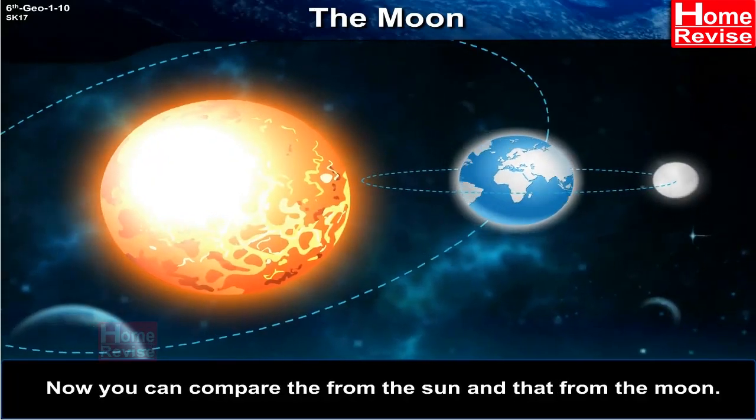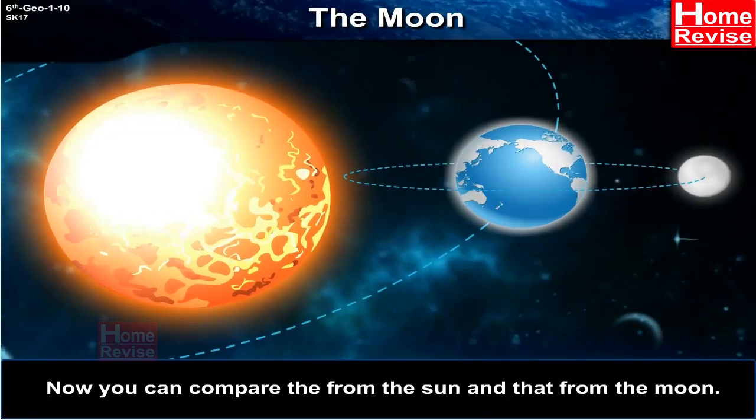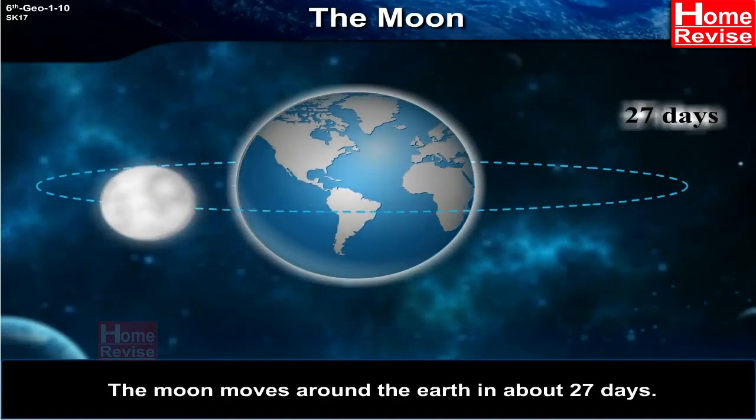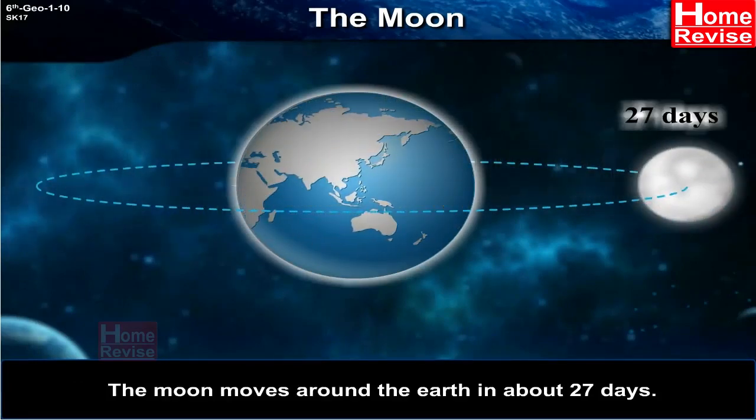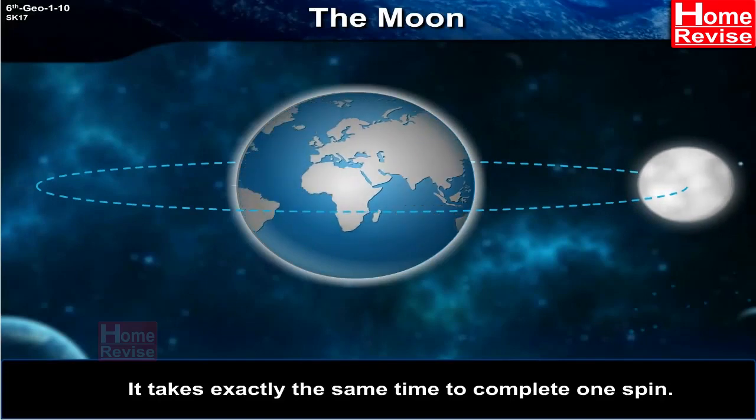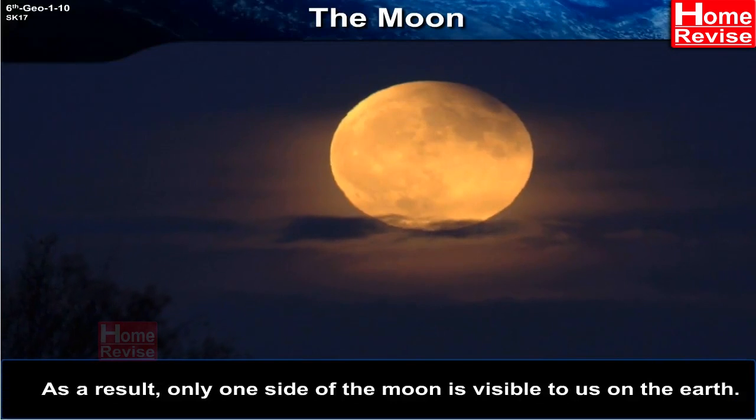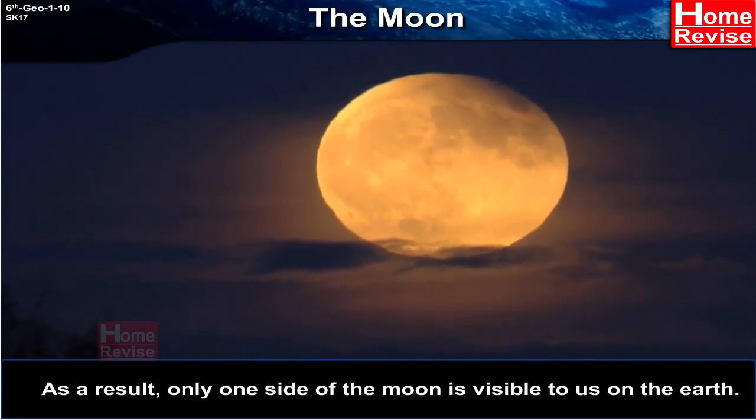Now you can compare the distance of the Earth from the Sun and that from the Moon. The Moon moves around the Earth in about 27 days. It takes exactly the same time to complete one spin. As a result, only one side of the Moon is visible to us on the Earth.